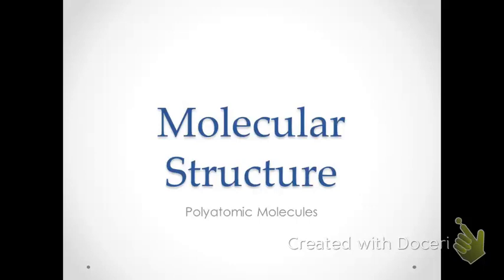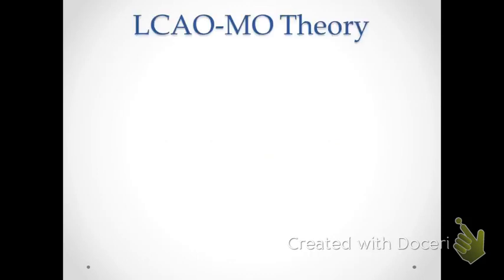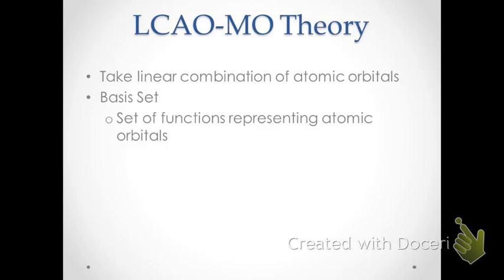Now that we've looked at molecular structures applied to diatomic molecules, let's move on to a discussion of polyatomics. We'll start again with the linear combination of atomic orbitals to generate molecular orbitals. We'll use the phrase 'basis set' to represent the set of functions that represent the atomic orbitals we're using to generate molecular orbitals.